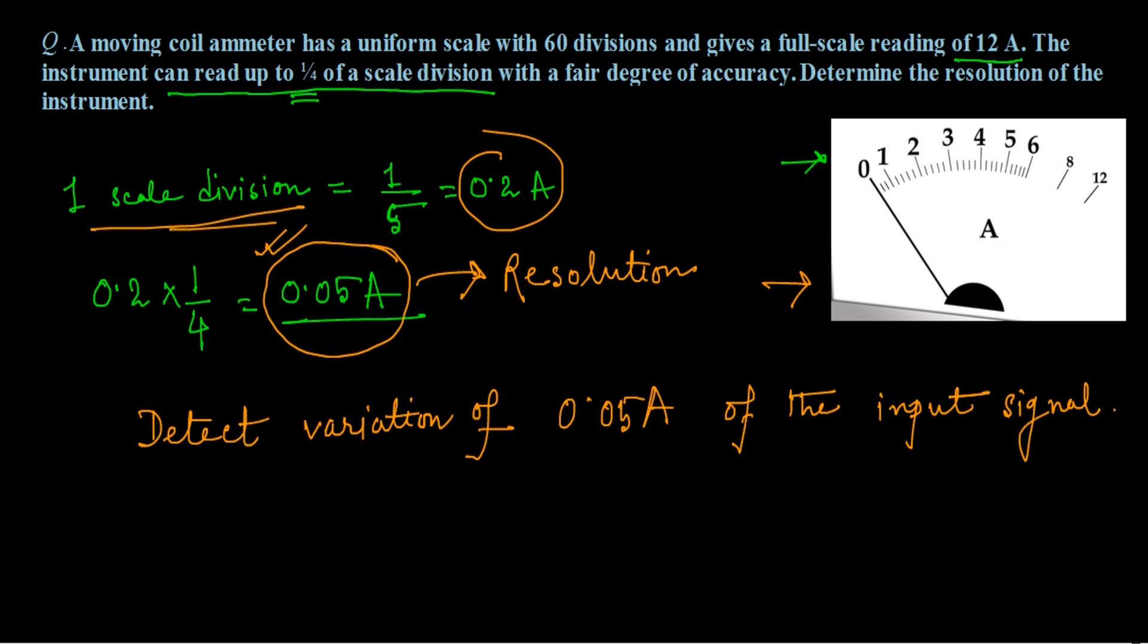0.2 ampere is one scale division of the ammeter. You can determine it in another way also. The total number of divisions in this ammeter is 60 divisions and the total reading is 12. Now divide 12 with 60, that is equal to 0.2 ampere, which I have calculated here. Now when the resolution comes into part, then you have to take care of this information given in the question.